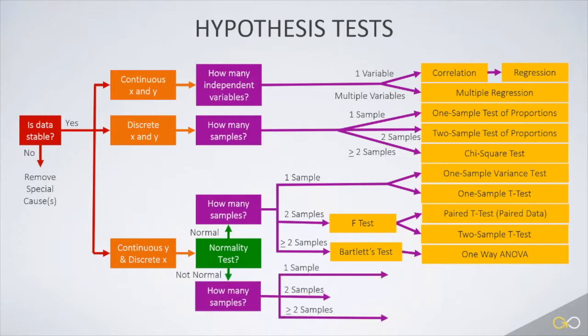Now let's look at the case where the data is not normal. Again, we ask the question to how many samples are involved. If there's only one sample, use the one-sample sign or the one-sample Wilcoxon, depending upon the shape of the data.